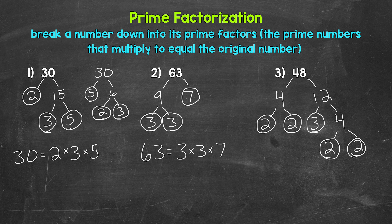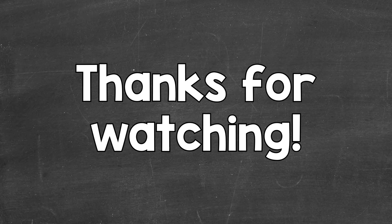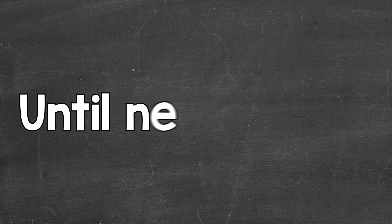We cannot break this down any further, so this is the prime factorization of 48. We can write this out as 48 equals two times two times two times two times three — we have four twos times three. Two times two is four, times two is eight, times two is 16, times three is 48. So we are correct. There you have it — that's what prime factorization is. I hope that helped. Thanks so much for watching. Until next time, peace.